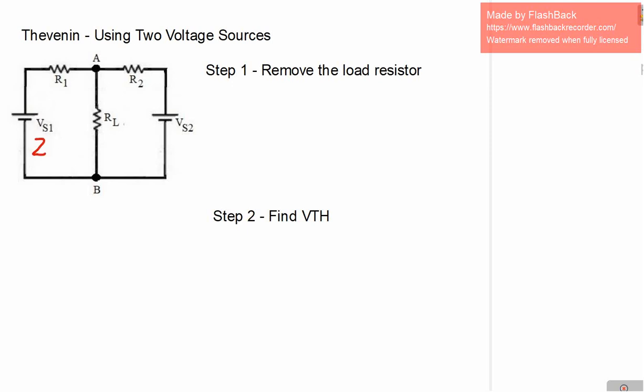We're going to go through the steps for this and then we're going to go through this example here. We have two voltage sources in this example. VS1 is 20 volts, VS2 is 10 volts, R1 is 2 ohms, R2 is 8 ohms, and the load resistor is 4 ohms.